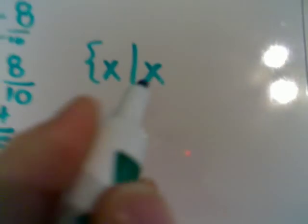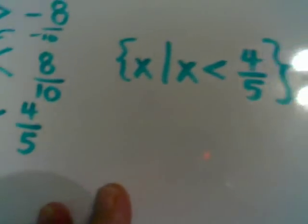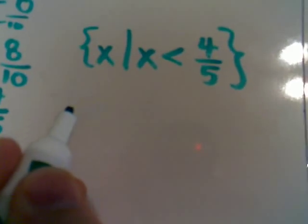Now let's come over here to my blank part. One way to write the solution set would be the set of all x's such that x is less than 4 fifths. That's set builder notation.